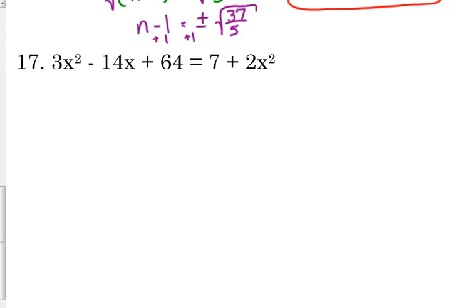One more example like this, and then I'm going to turn you loose for a minute. Number 17. 3x squared minus 14x plus 64 is equal to 7 plus 2x squared. Got a good little bit to move around here. We want all of our variables on the left side, so we need to subtract that 2x squared. We want our constants on the right side, so we need to subtract 64. So 3x squared minus 2x squared is 1x squared.